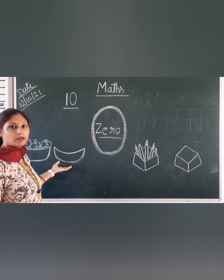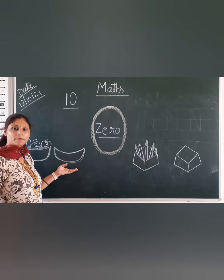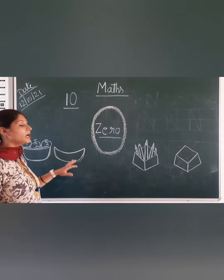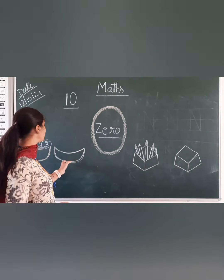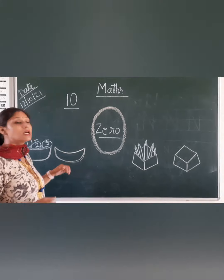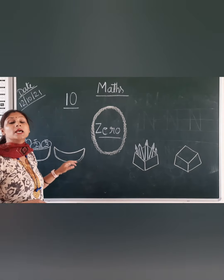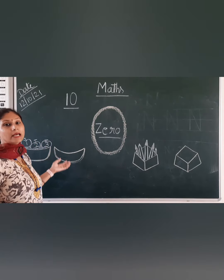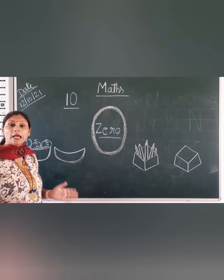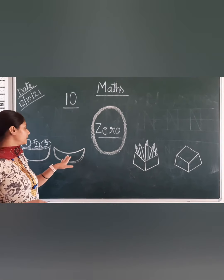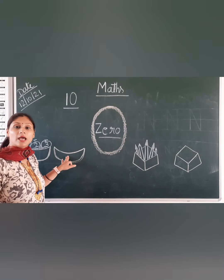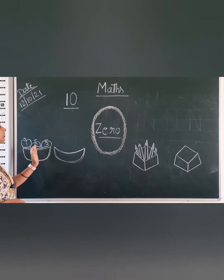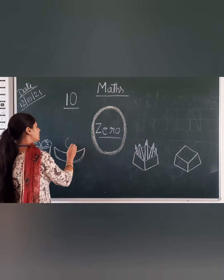Now look at this. Dekhi, yaha par koi bhi apple nahi hai. So this basket has zero apples. Agar yaha par ek bhi apple nahi hai, so hum kya bolenge? This basket has zero apples. This basket is empty. Hum isko aise hi recognize karte hai — is basket pe ek bhi apple nahi hai, so hum kya bolenge? Zero apples. This basket is empty. Is basket pe kitne apples hai? One, two and three. And is mein zero apples.